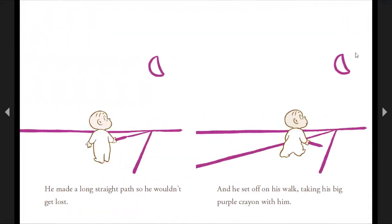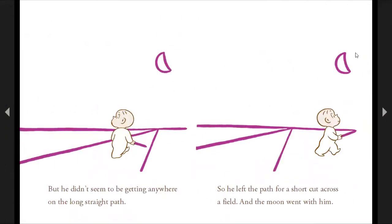He made a long straight path so he wouldn't get lost. And he set off on his walk, taking his big purple crayon with him. But he didn't seem to be getting anywhere on the long straight path. So he left the path for a shortcut across a field and the moon went with him.